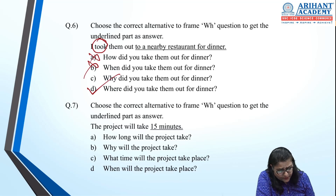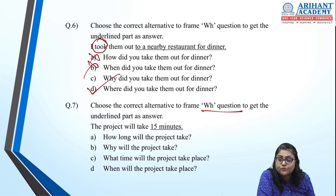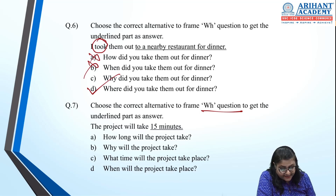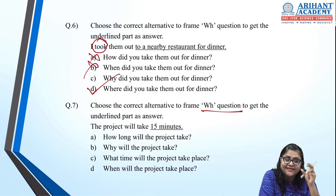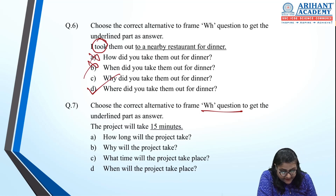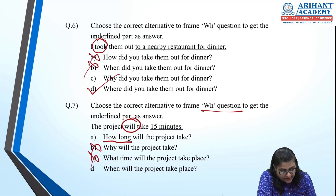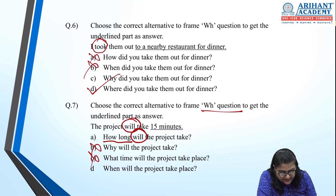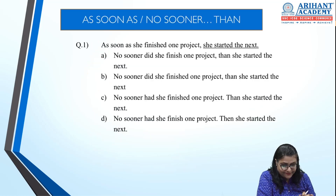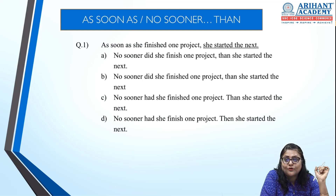Next: 'The project will take 15 minutes.' '15 minutes' is a duration, not a specific time. So use 'how long': 'How long will the project take?' The sentence uses 'will' (future), so the question also uses 'will.' This is the correct option.